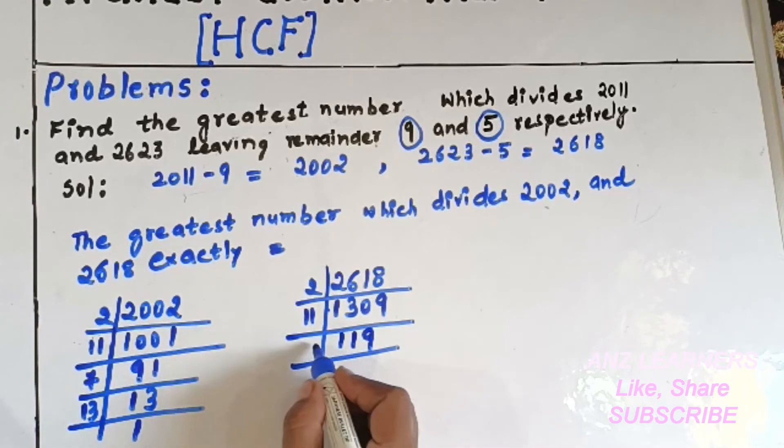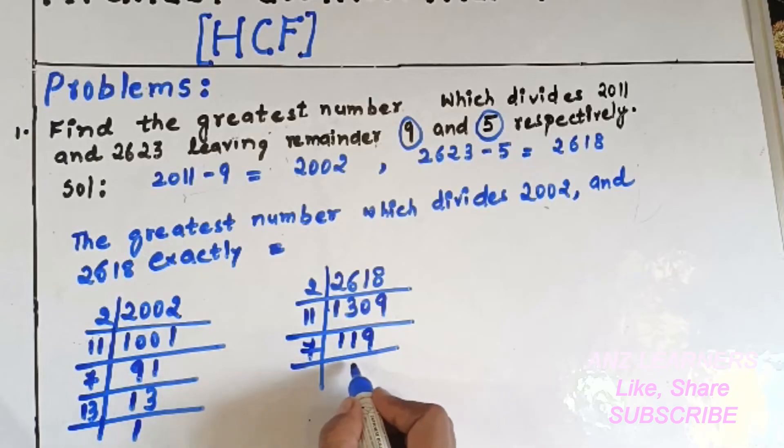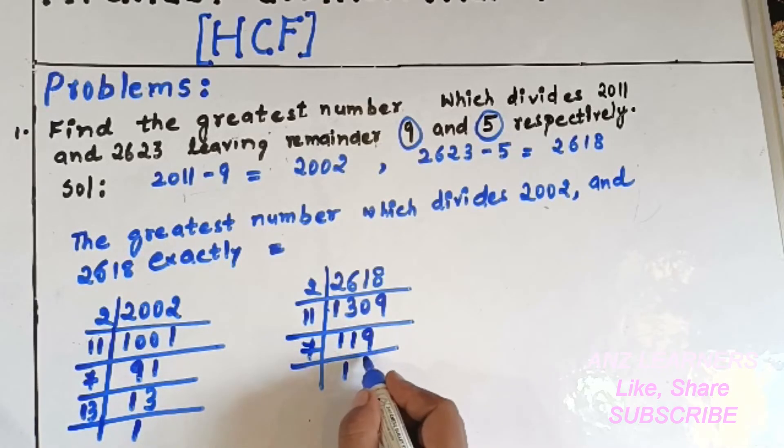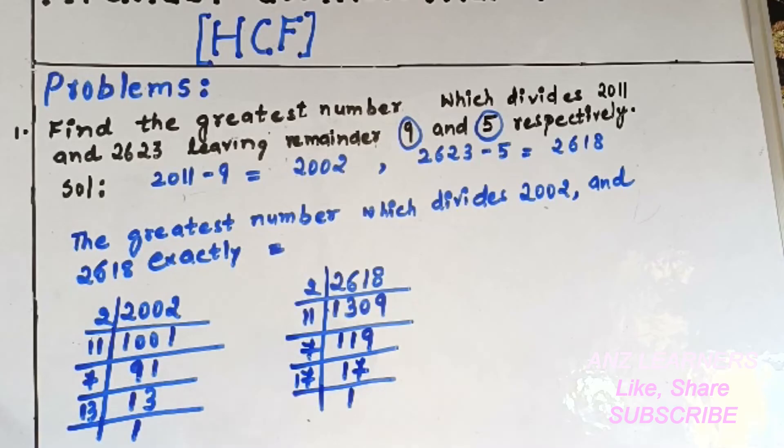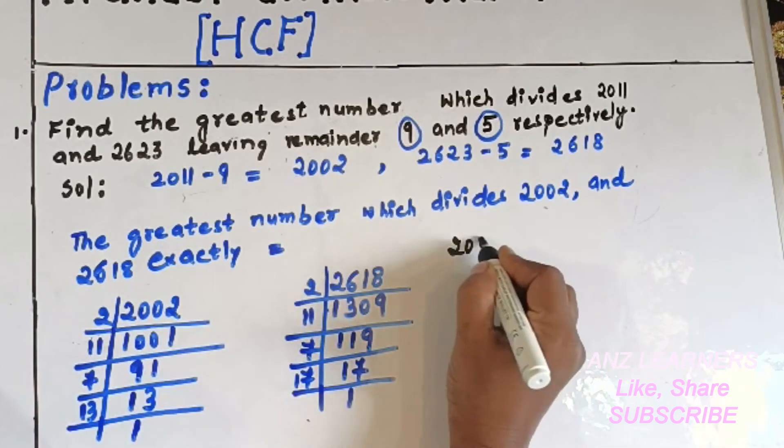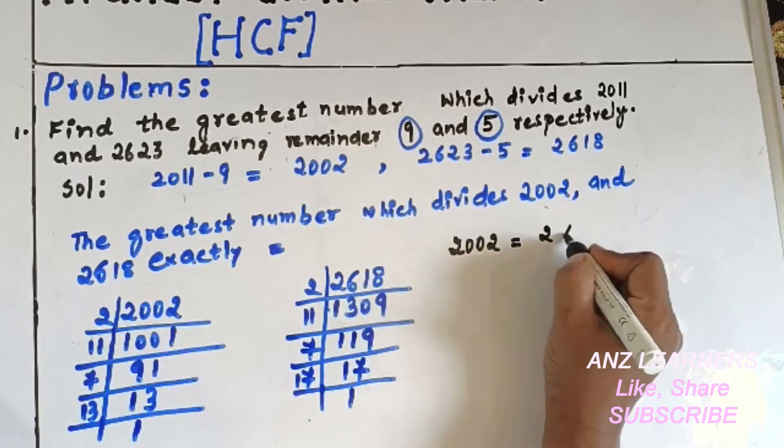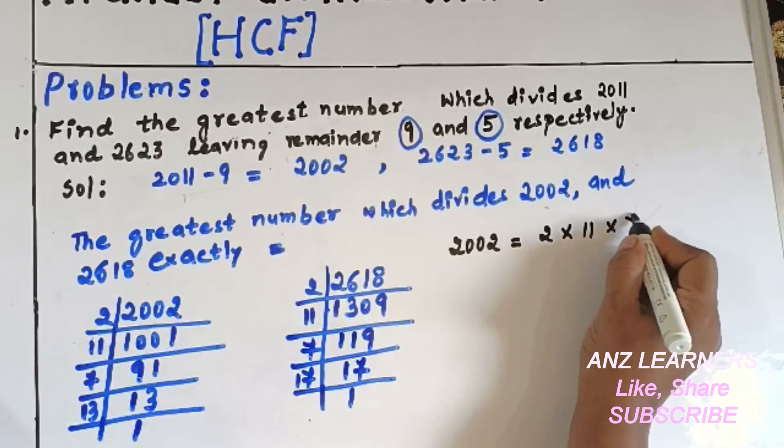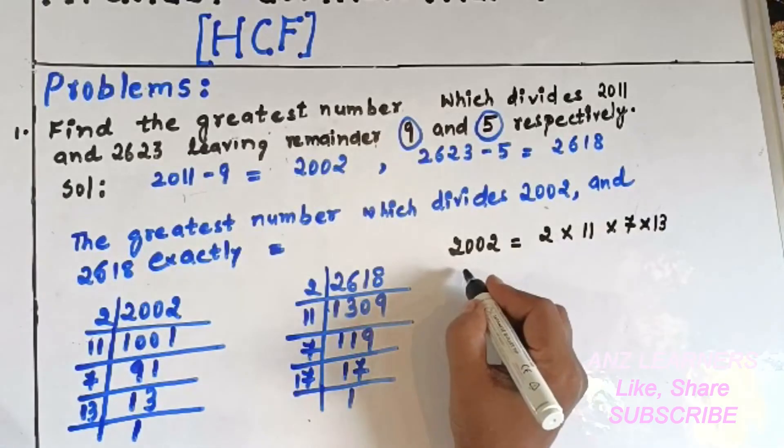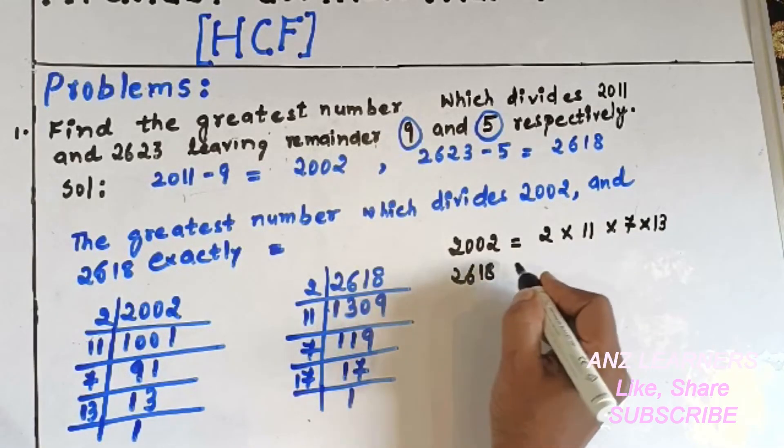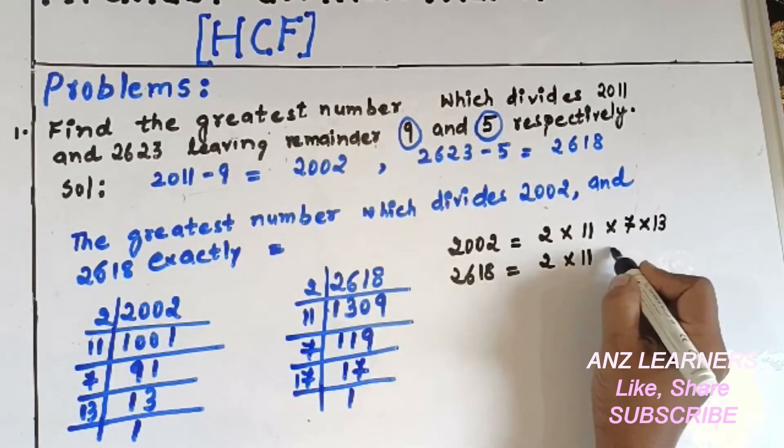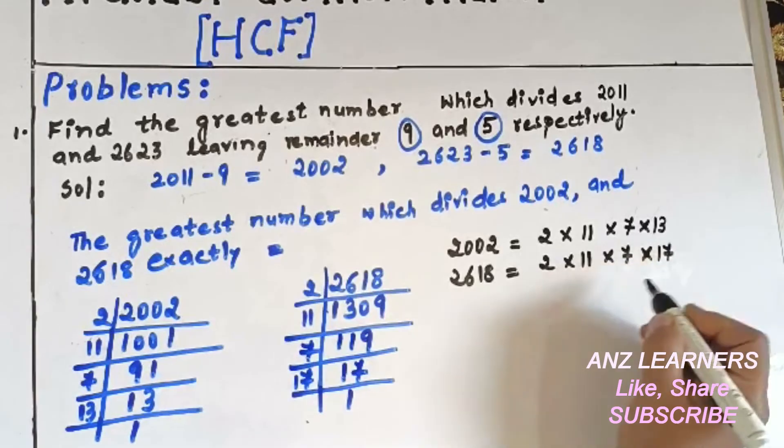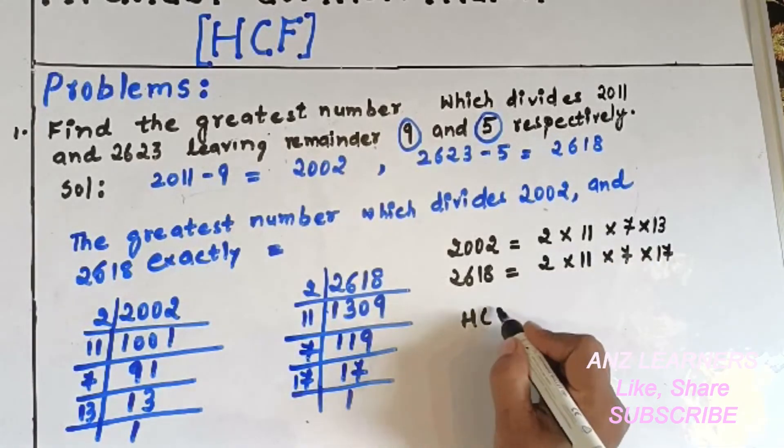then 7. 17 is a prime number, so we stop here. The factors of 2002 will be 2 × 11 × 7 × 13. The factors of 2618 will be 2 × 11 × 7 × 17. So the highest common factor